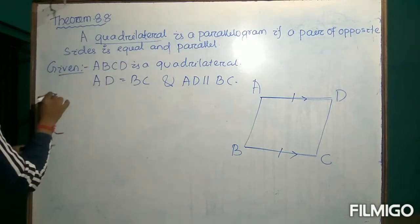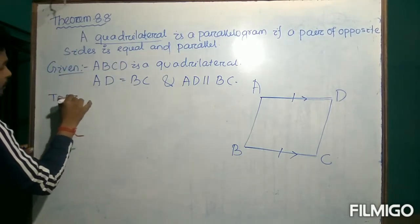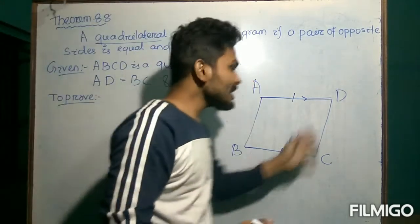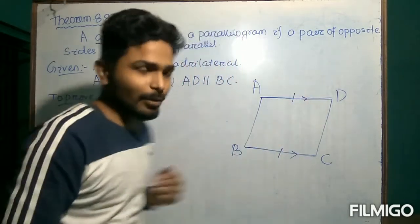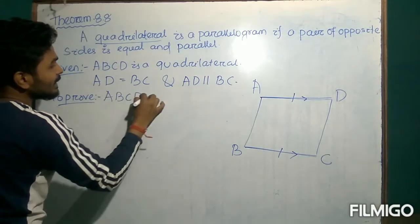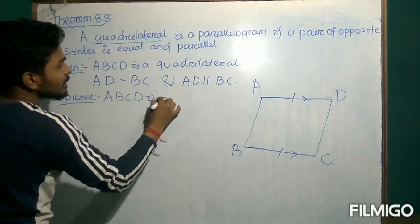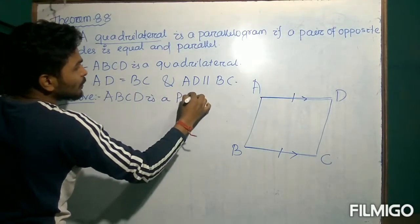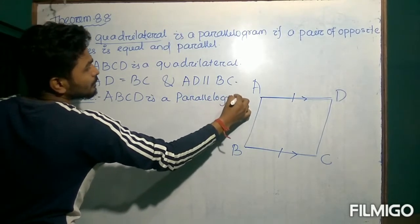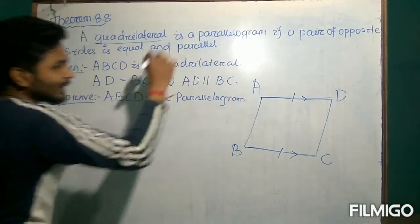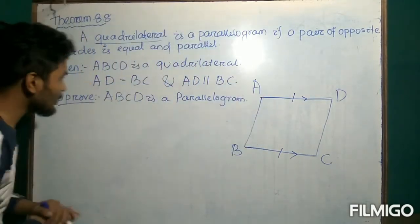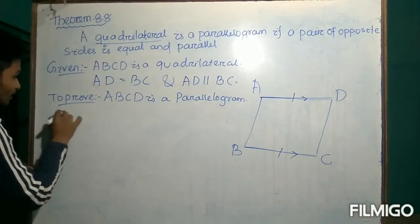From this data, we have to prove that ABCD is a parallelogram. Let us find out how we can prove that this is a parallelogram. Proof: